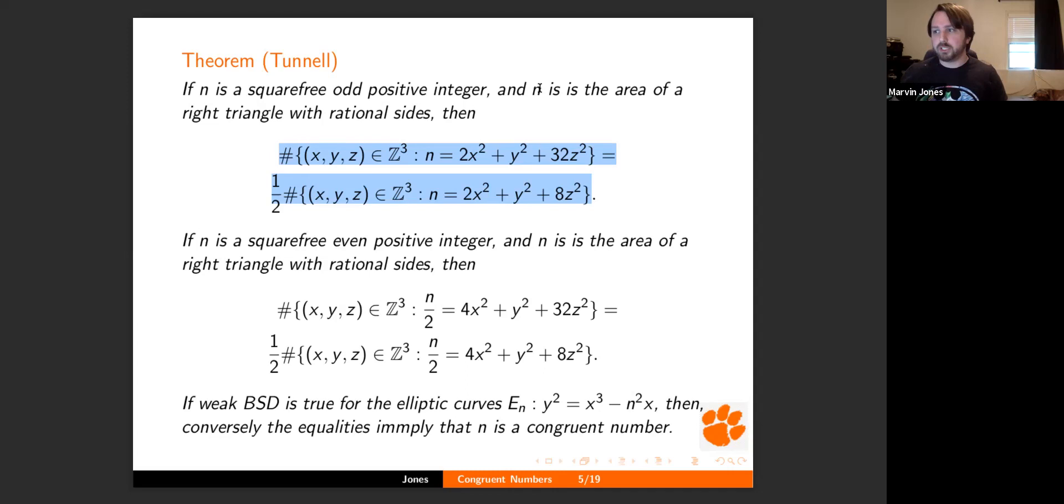second typo over there. If BSD is true, this equality holding implies that N is a congruent number. So the first direction is free, doesn't rely on BSD at all. The second direction is where BSD is necessary. So this gives you a very algorithmic way to check if N is, in fact, a congruent number, assuming BSD. We'll see what BSD is in a little bit.